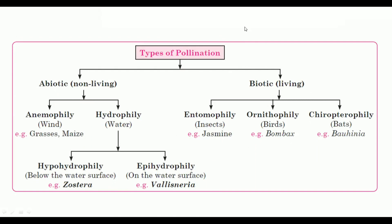The types of pollination are abiotic — by non-living agents — and biotic — by living agents. For non-living, there is anemophily and hydrophily. Pollination takes place by wind in grasses and maize — this is a very important example. Hydrophily is non-living: hypohydrophily is below the water surface and epihydrophily is on the water surface. Zostera is an example of hypohydrophily.